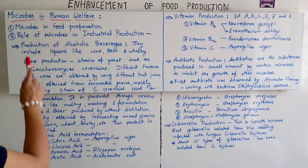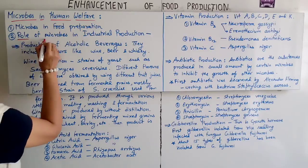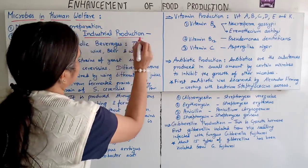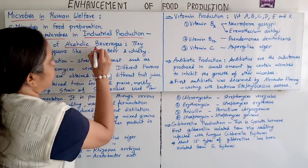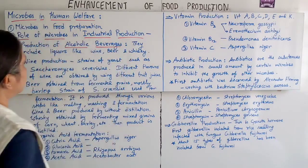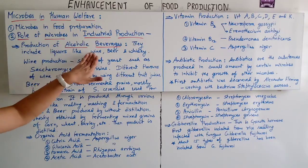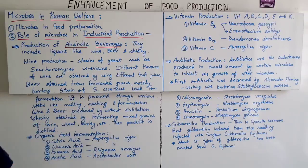After microbes in food preparation, the next topic is the role of microbes in industrial production. Under that, the first one is the production of alcoholic beverages, which includes liquors like wine, beer, and whiskey.